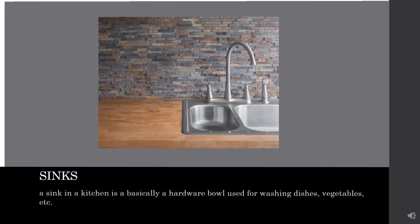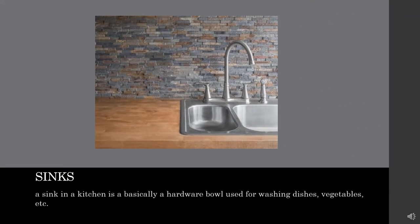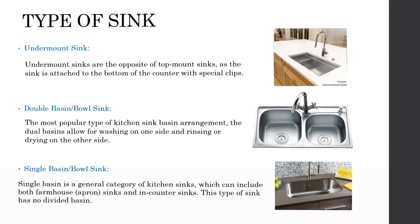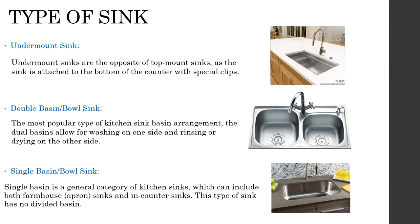A sink in a kitchen is essentially a hardware bowl used for washing — it is used for washing dishes, vegetables, etc. The types of sinks are undermount sinks, double basin or bowl sink, and single sink.